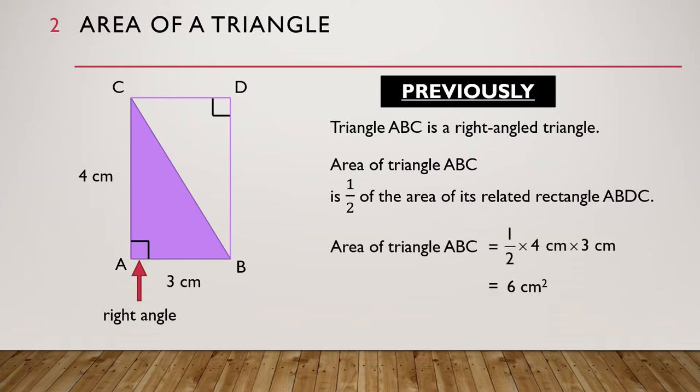So, the area of triangle ABC is equal to half times 4 cm times 3 cm, which is equal to 6 cm².